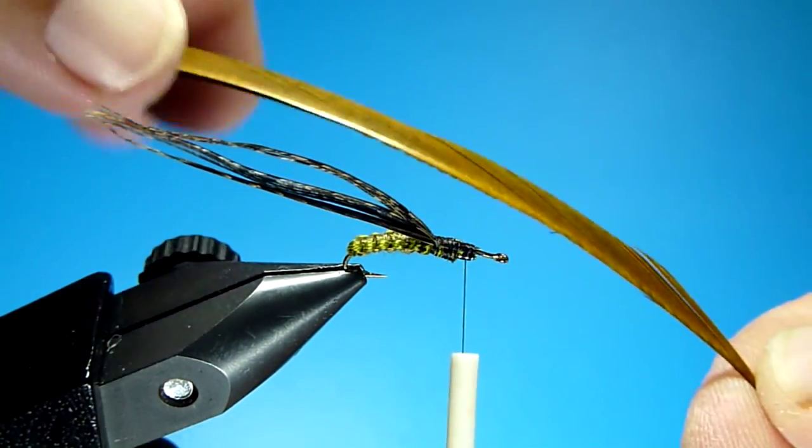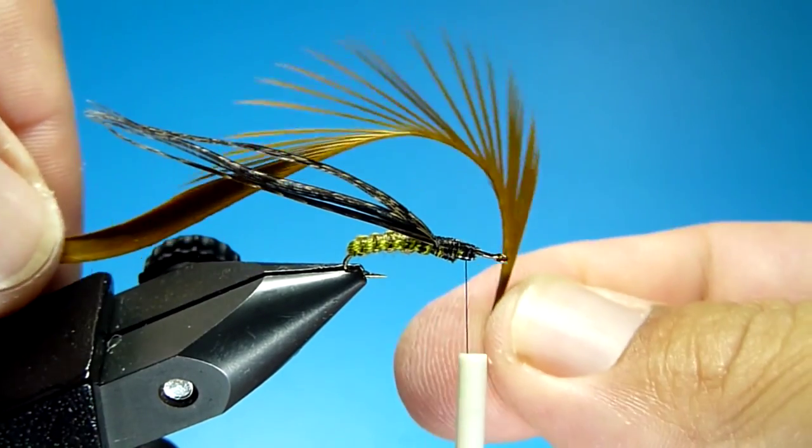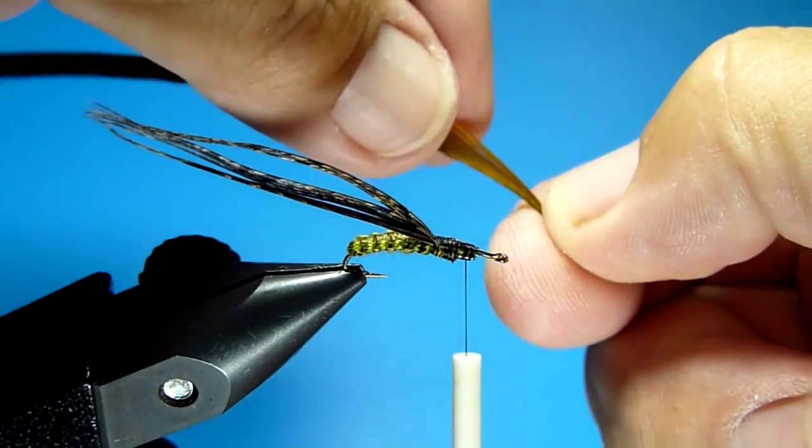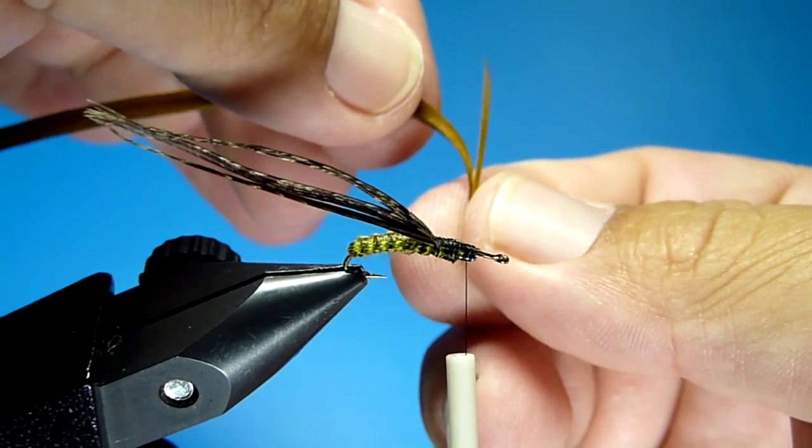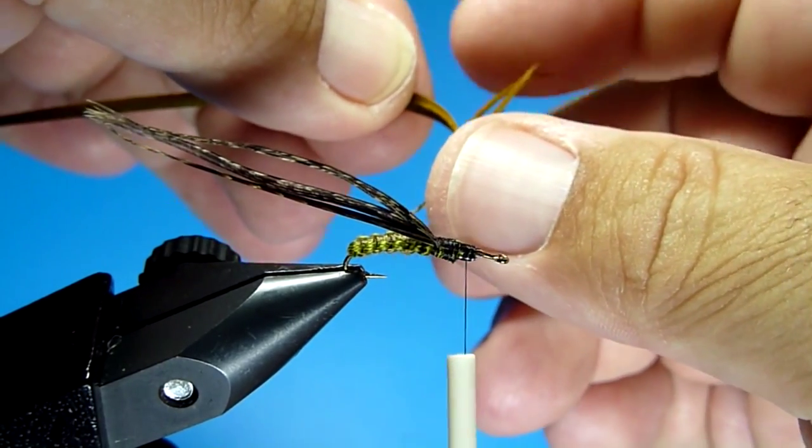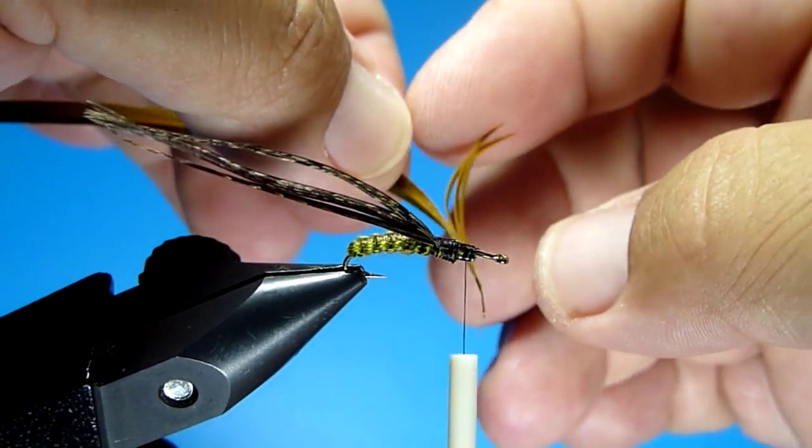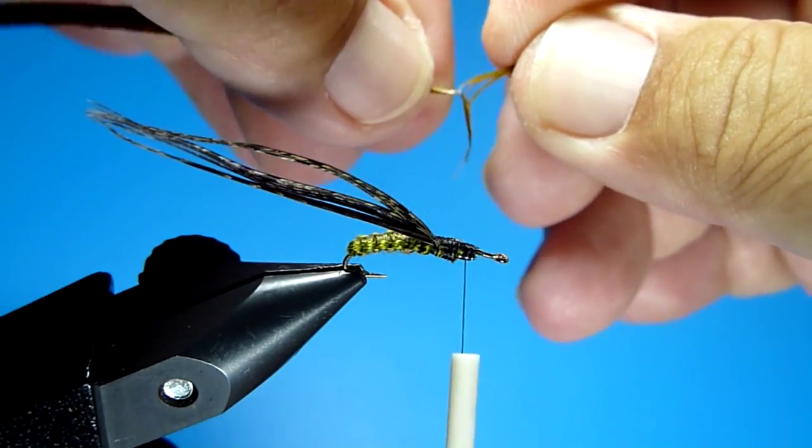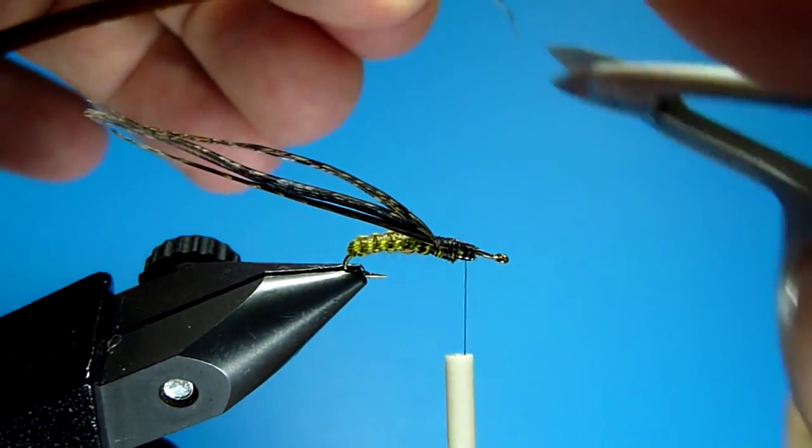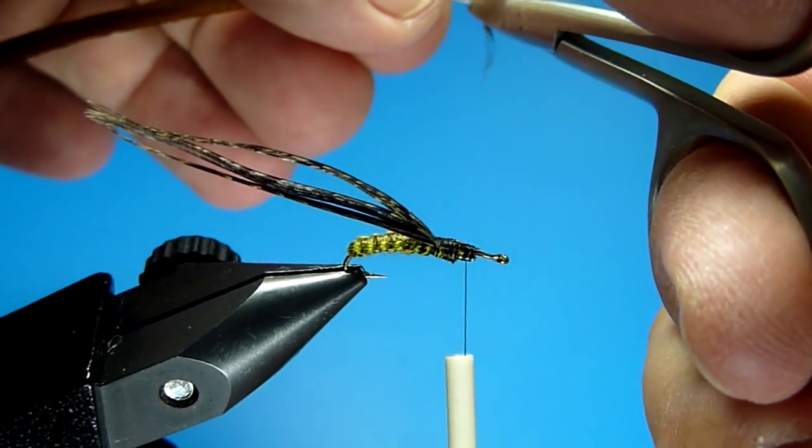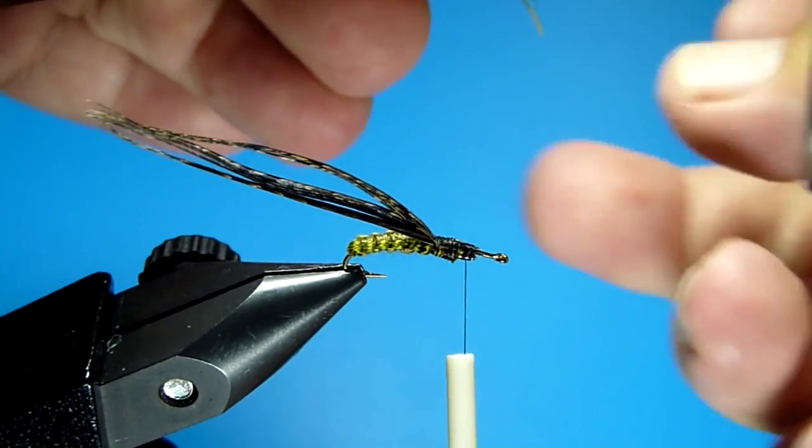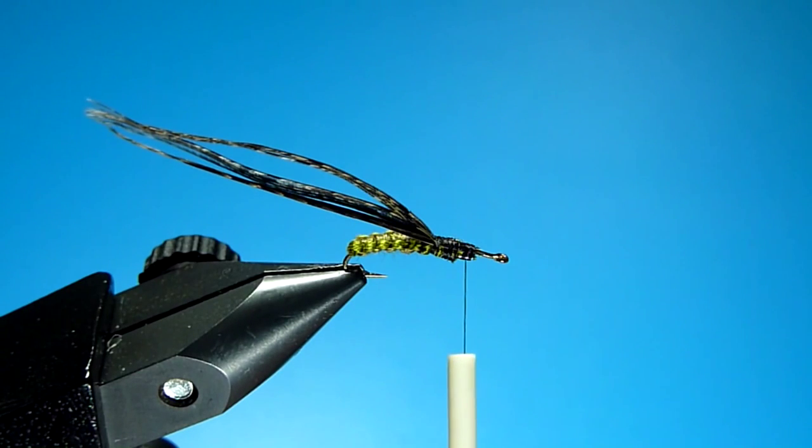We're going to go ahead and tie in the goose biot legs here, and what I do is I leave them on the quill. So I pick off three legs for these, you know, three on each side. Go ahead and separate those up, and then just clip them right underneath that third one, and it'll leave them on the quill. It makes them so much easier to handle than trying to tie in three individual slippery goose biots.